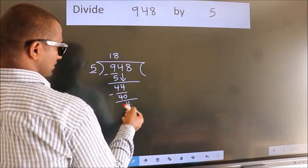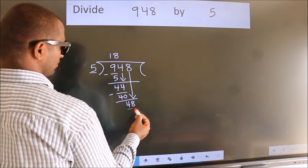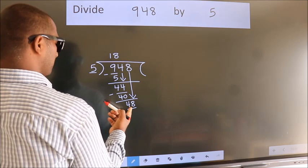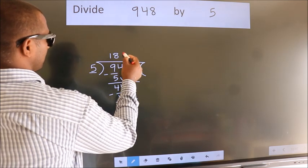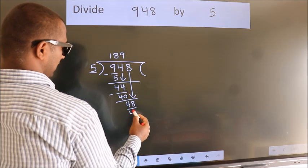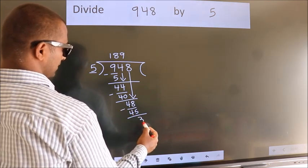After this, bring down the next number. So 8 down, giving us 48. A number close to 48 in the 5 table is 5 nines, which is 45. Now we subtract. We get 3.